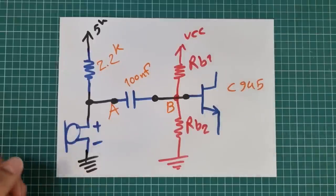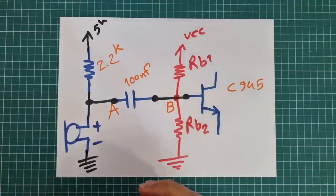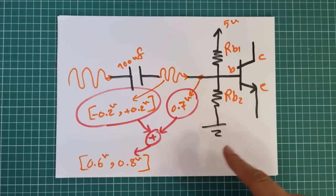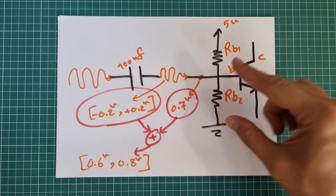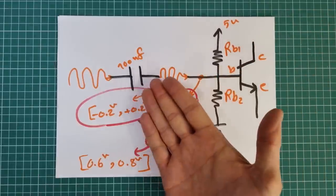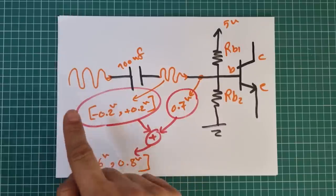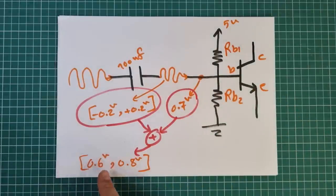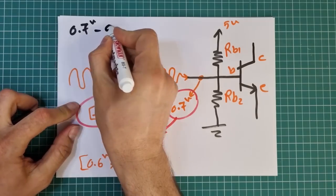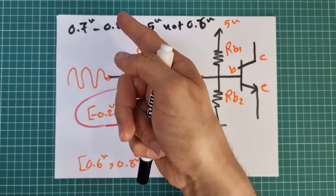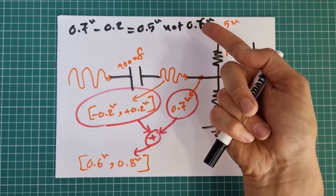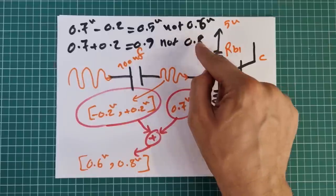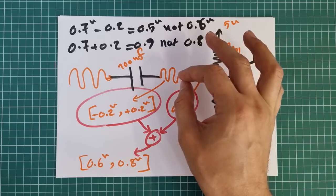You may think there is a mistake — let's do a simple calculation. We have to produce 0.7 volts on the base terminal using bias resistors and add the voice signal, which is between 0.2 volts negative and 0.2 volts positive. That would result in 0.5 volts minimum and 0.9 volts maximum, not 0.6 and 0.8 volts. Is there a mistake? You will get the answer later in this video.